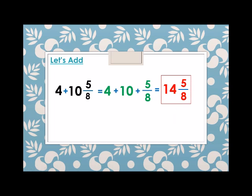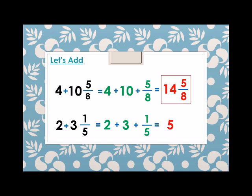Another example: two plus three and one fifth. We write two plus three plus one fifth. We add the whole numbers first: two plus three equals five, and keep the fraction one fifth. Therefore, two plus three and one fifth equals five and one fifth.